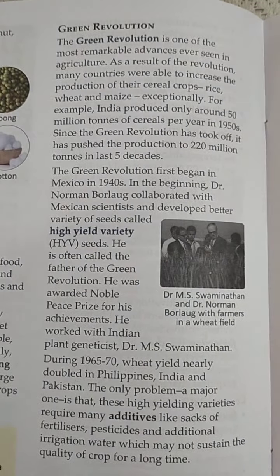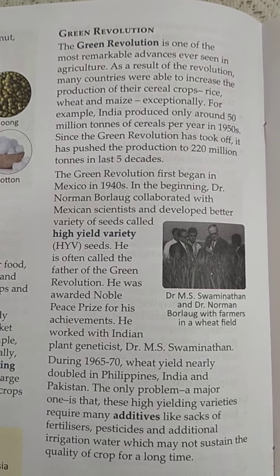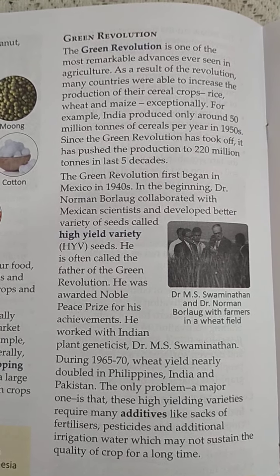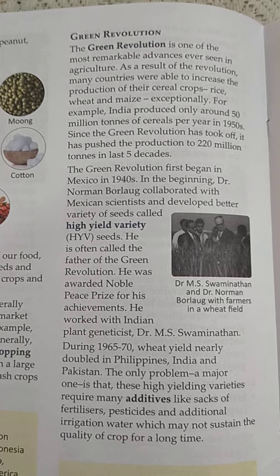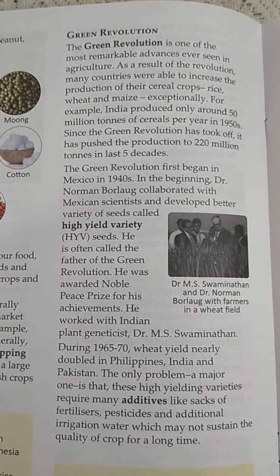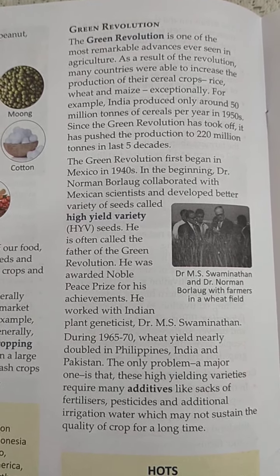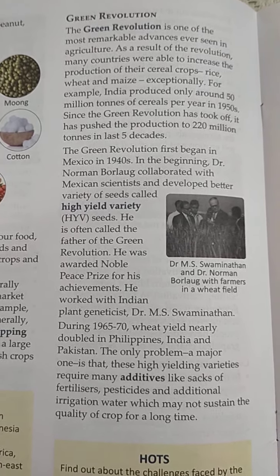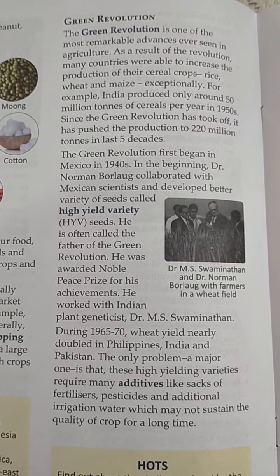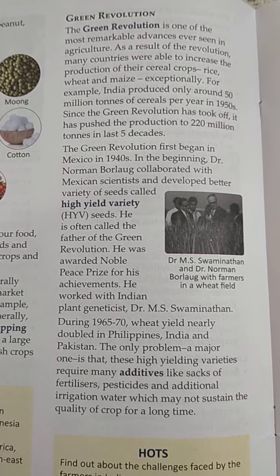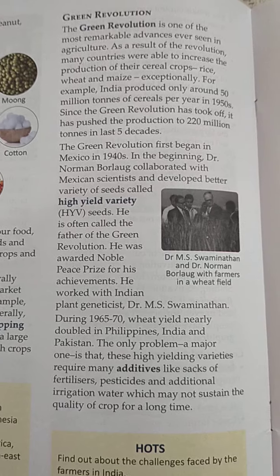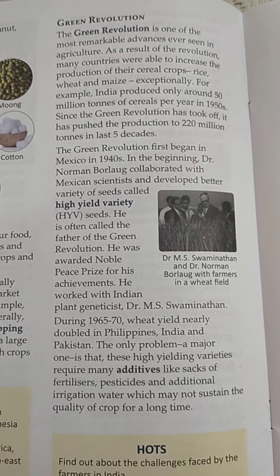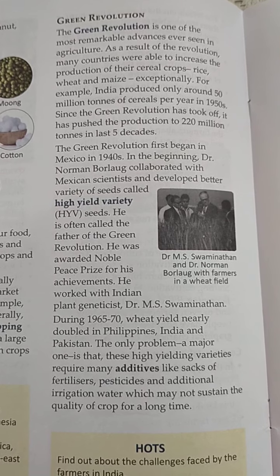Coming to the next topic — the Green Revolution. It is one of the most remarkable advances ever seen in agriculture. As a result of the revolution, many countries were able to increase the production of their crops like rice, wheat, and maize. For example, India produced only around 50 million tons of cereals, but since the Green Revolution this production has increased to 220 million tons.